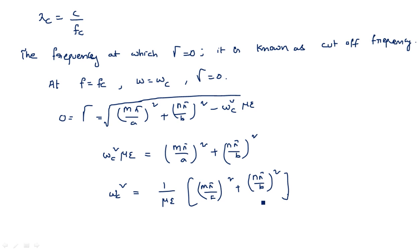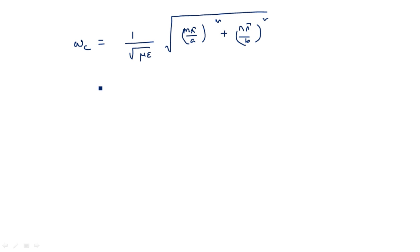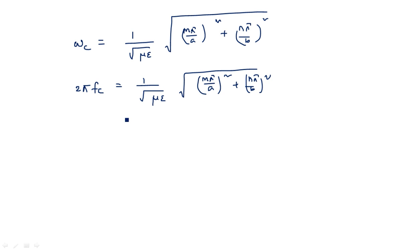The derivation is somewhat lengthy but easy and very important — calculation of cutoff frequency is frequently asked. Solving for omega c: ωc = (1/√με) × √[(mπ/a)² + (nπ/b)²]. Since ωc = 2πfc, we get: fc = (1 / 2π√με) × √[(mπ/a)² + (nπ/b)²].